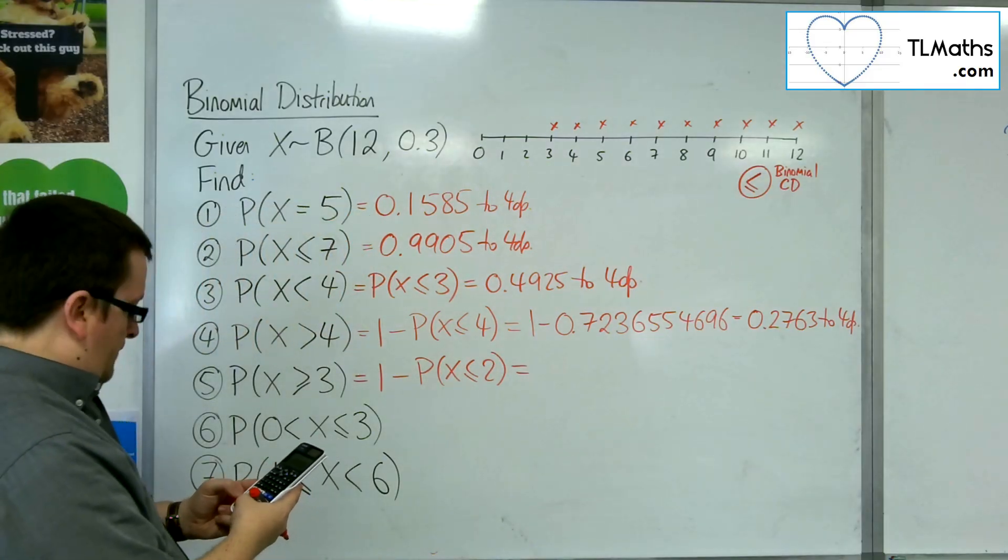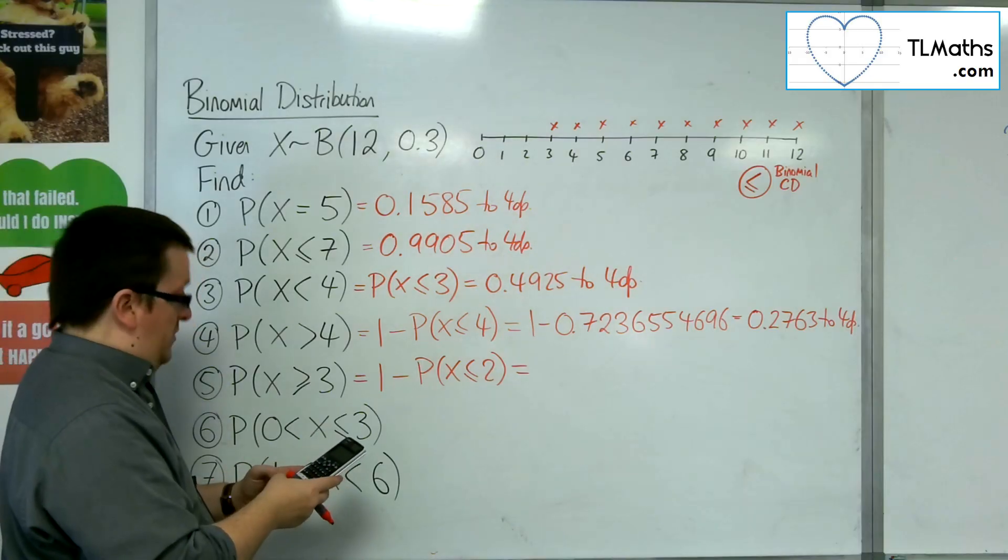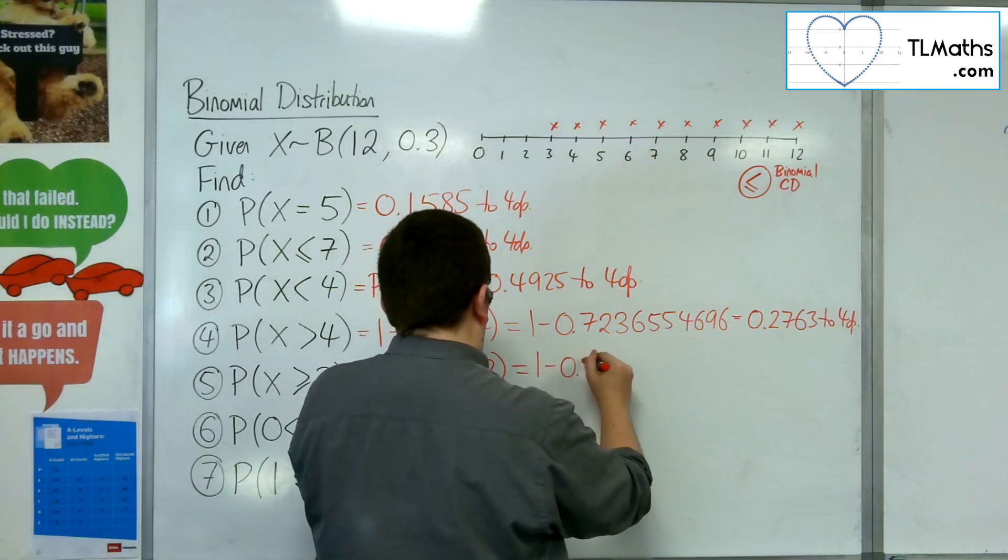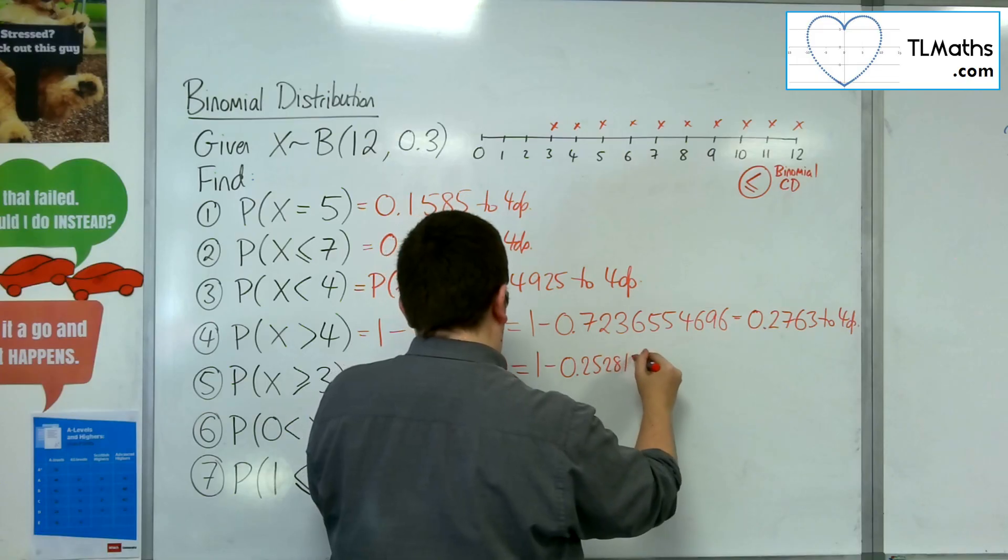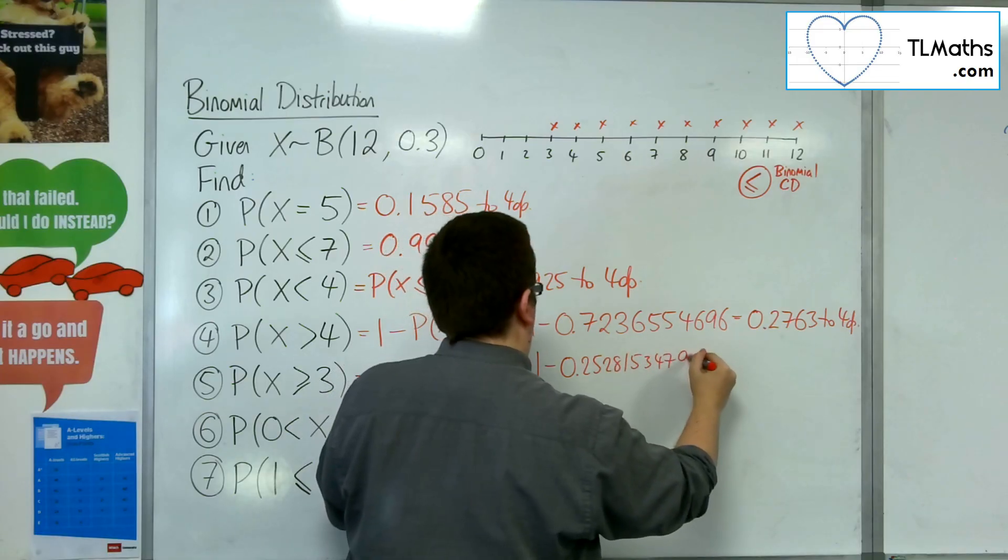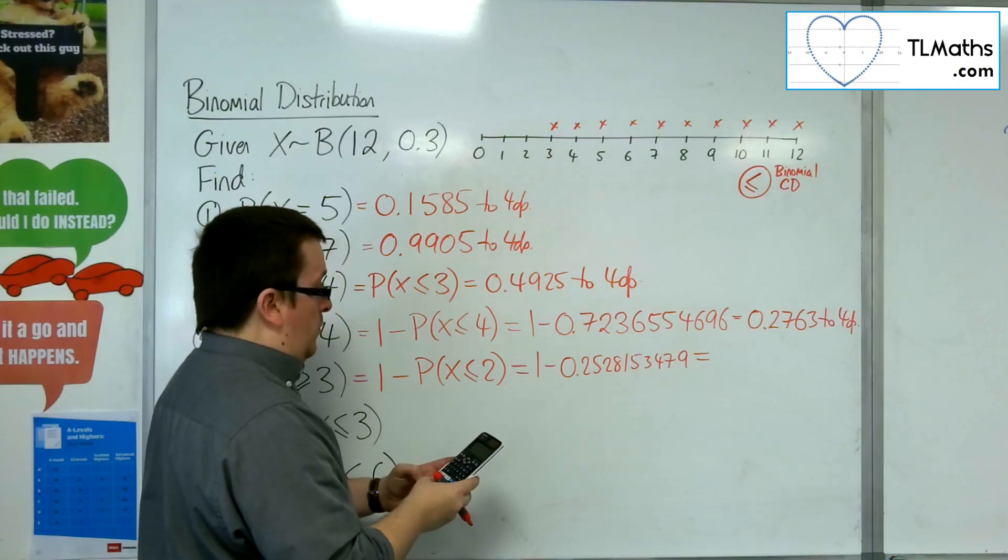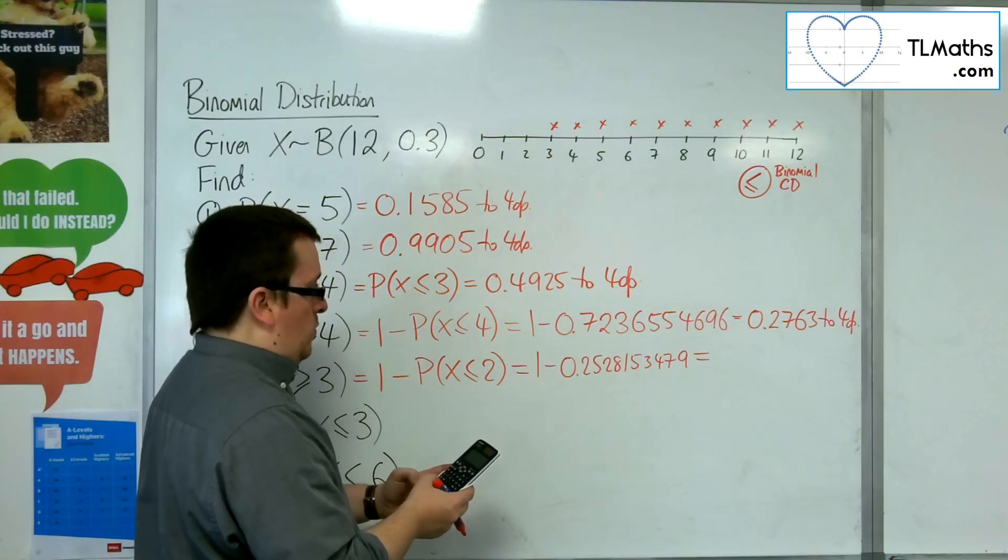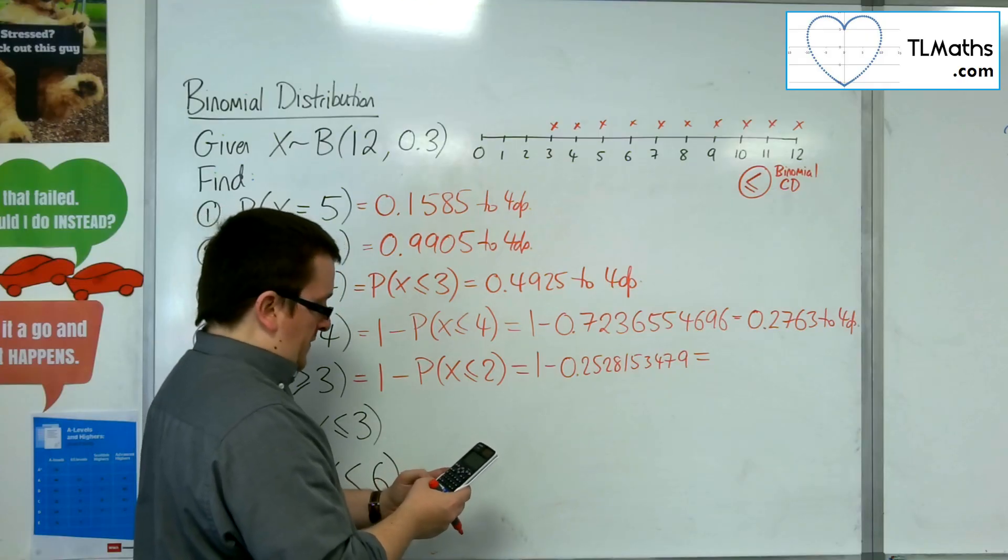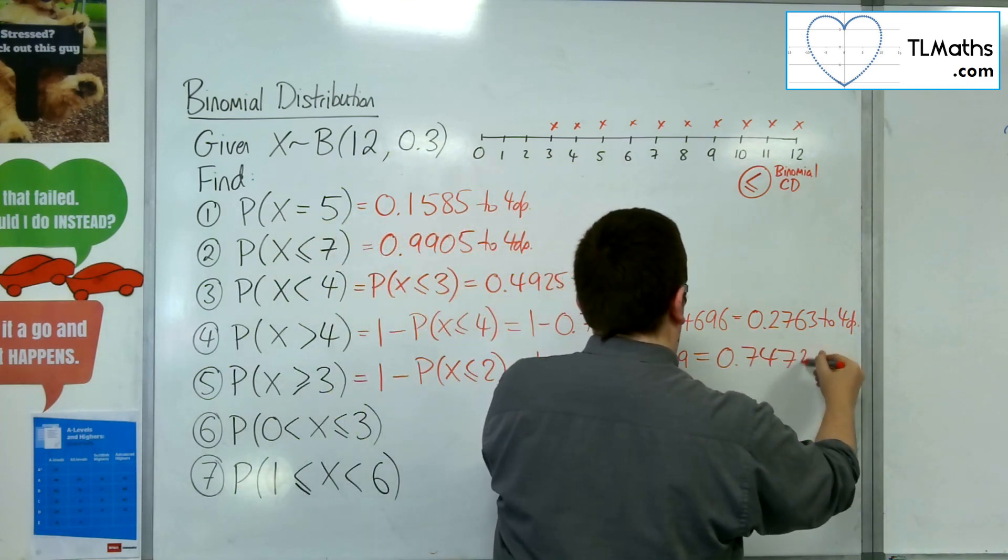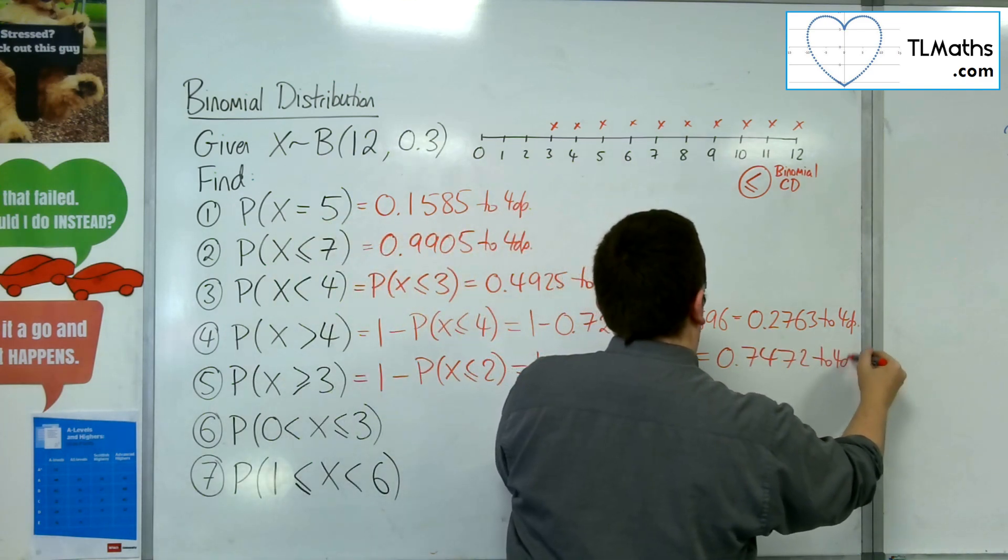So, x is 2, n is 12, probability is 0.3. So, 1, take away 0.2528153479. So, 1, take away 0.2528153479 is 0.7472 to 4 decimal places.